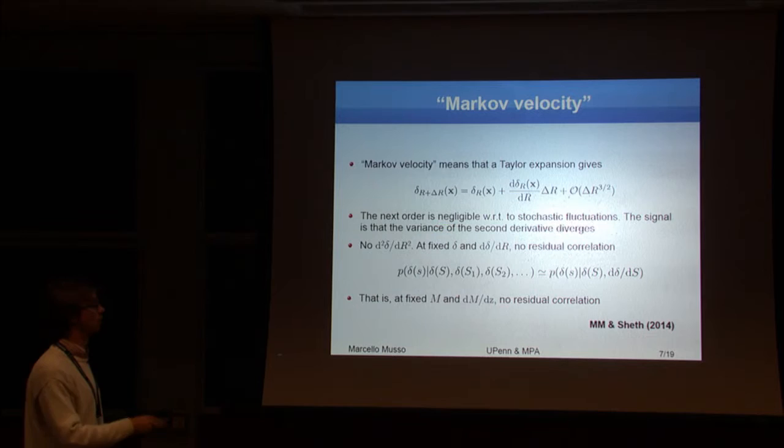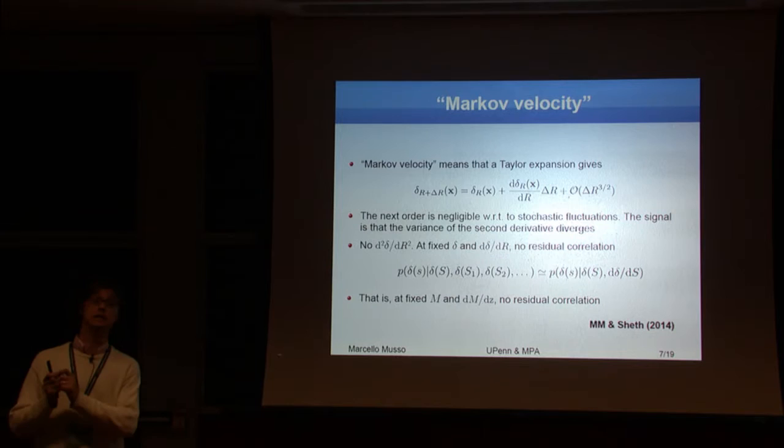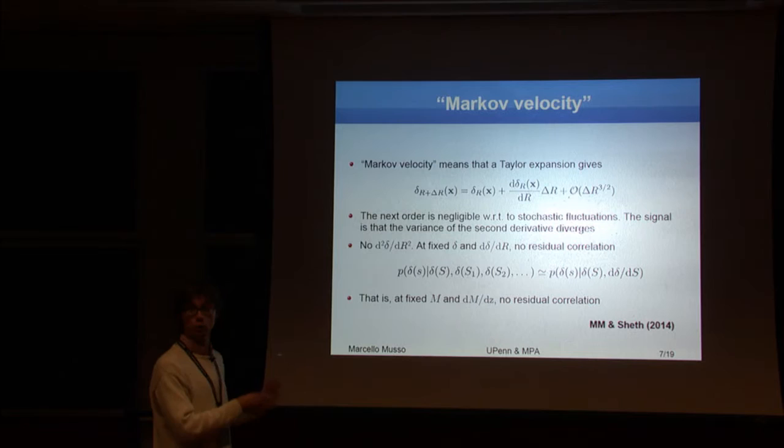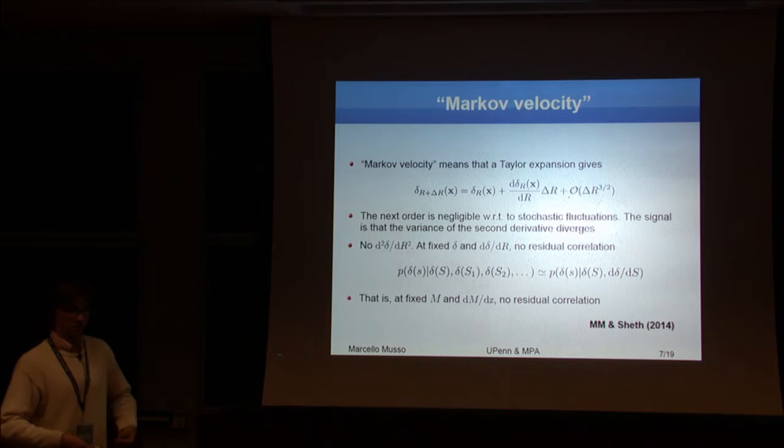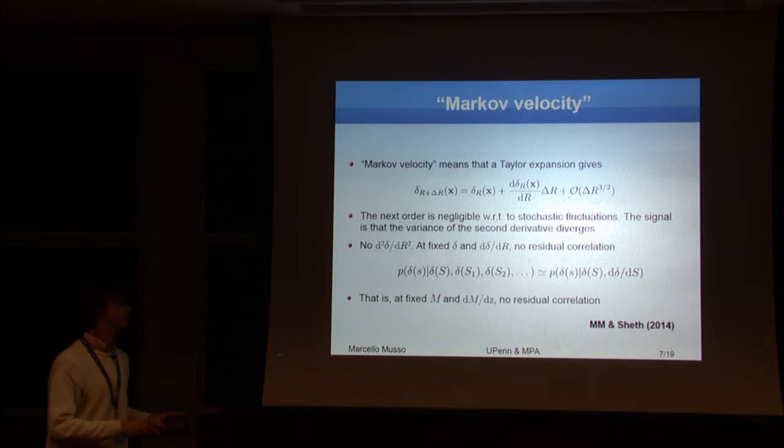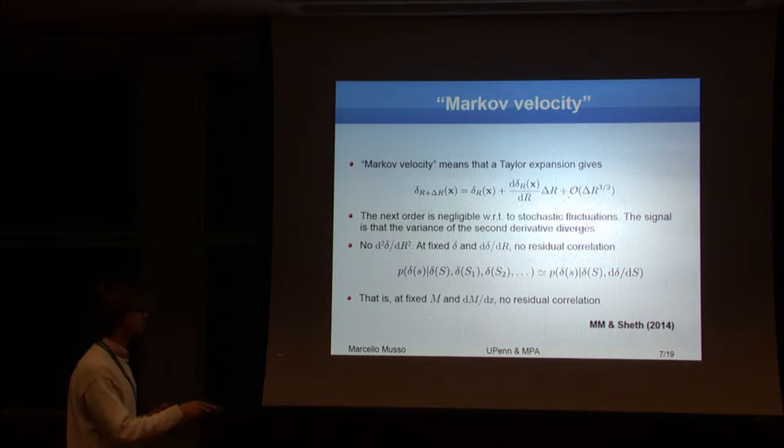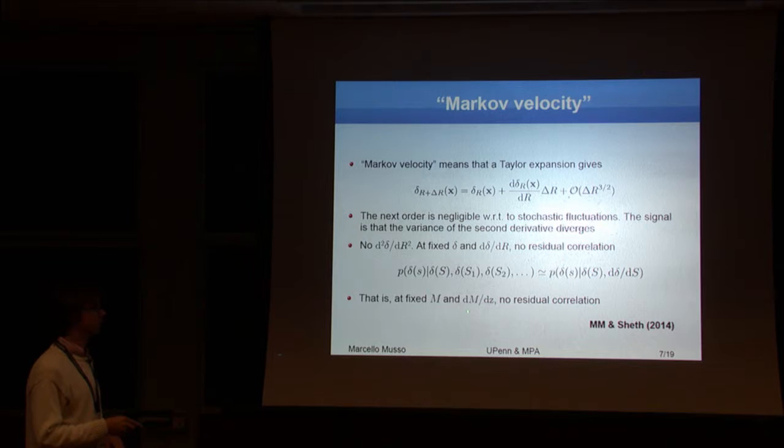The second derivative never appeared, because at some point, stochasticity becomes important. So there is this term that goes like a fractional power, delta r to the three halves. This dominates over a possible second derivative term that would go like delta r squared. So this means that the conditional probability of delta at one scale, given the whole past trajectory, reduces to the conditional probability of delta at one scale, given delta at a larger scale and the slope at the larger scale.